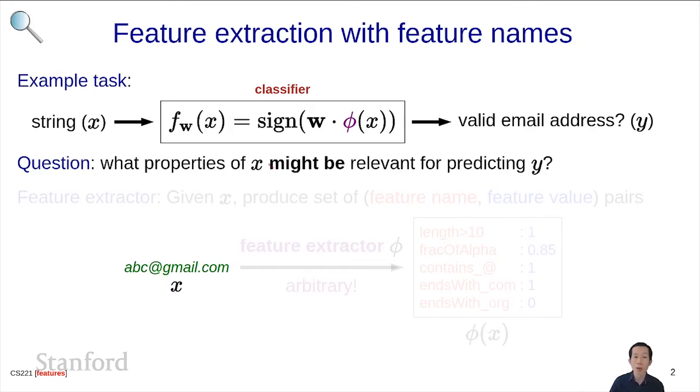Of course, you don't want to necessarily commit to a particular aspect to be important because you don't know that you want to learn that from data. But you should give the learning algorithm some guidance. So what we're going to do is define the feature extractor as given x, produce a set of feature name, feature value pairs.